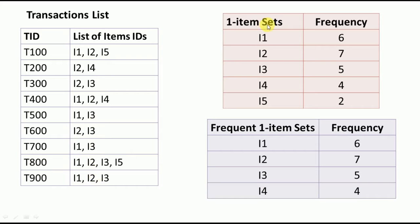In the Apriori algorithm, the first step is to calculate the frequent item sets. Once we get the frequent item sets, we will try to form the rules. Initially, we will start with one item at a time, which is why this table is named as one-item sets and frequency.